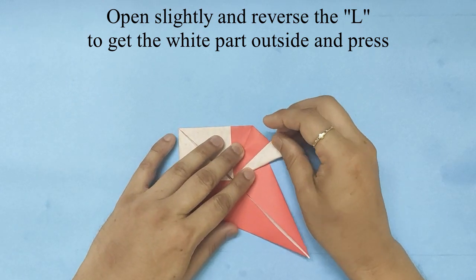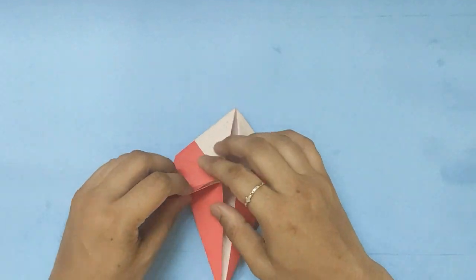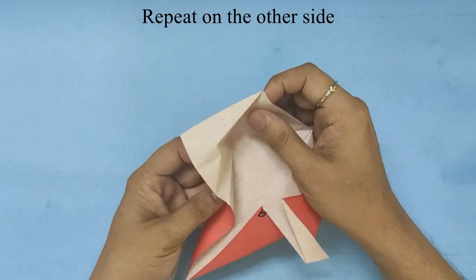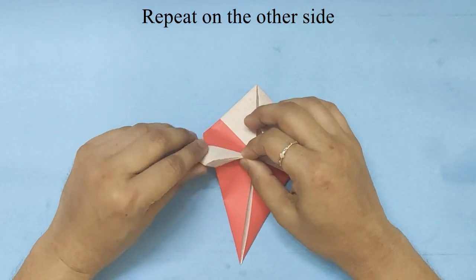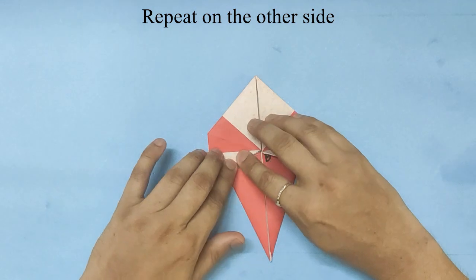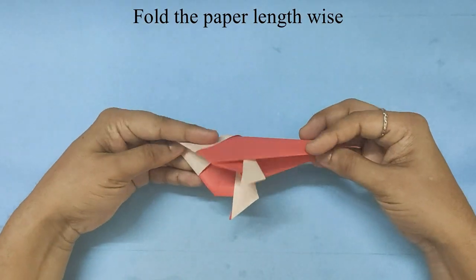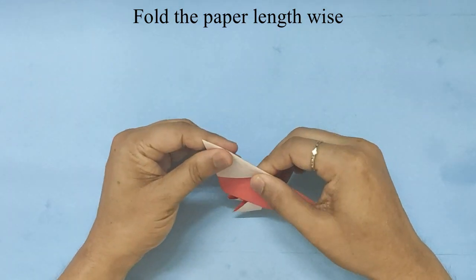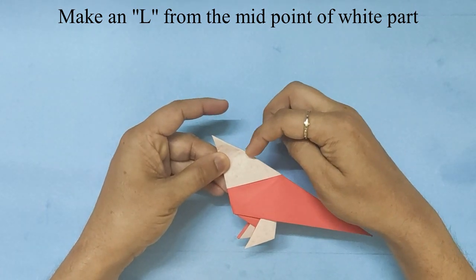We will fold the whole paper lengthwise. You will make an L fold from the midpoint, forming the beak.